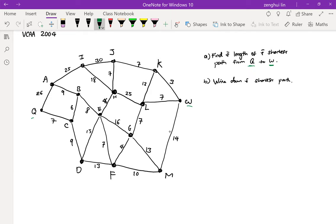So we start here by boxing Q and we know that we can either go to A or C. From Q to A takes 26 steps. From Q to C takes 7 steps. So since Q to C is shortest, I will box this up.